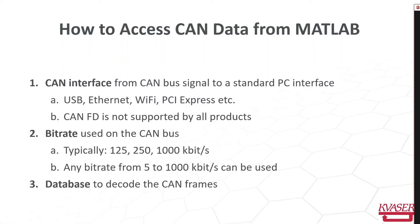You also need to find out the bit rate. There are some typical bit rates like 125, 250, and 1000 kilobits per second, but a CAN bus can have any bit rate from 5 to 1000 kilobits per second, so you have to check which bit rate is actually used. And to decode information, you need some kind of database that describes how to identify different types by the CAN ID or something else.